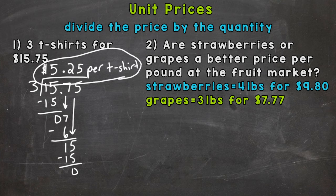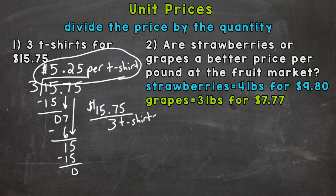So again, divide the price by the quantity. Sometimes you'll see these set up as a fraction first. A fraction is a division problem, so you may see $15.75 divided by 3 t-shirts, and then you can set it up as a long division problem and go from there. So again, be aware of these being set up as fractions. It's the same thing as division. Fractions are division. So let's